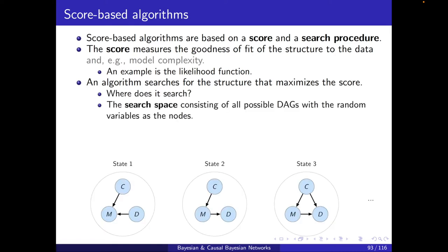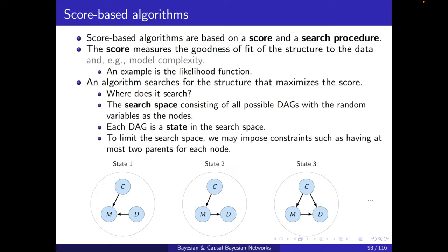Where does it search? The search space consists of all possible DAGs with the random variables as the node. So if we have three random variables, C, M, D, then all possible DAGs over these variables will be our search space. And each of these DAGs will be one state. And to limit the search space, we may impose constraints such as having at most two parents for each node.